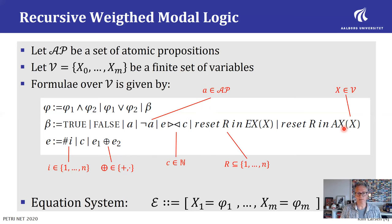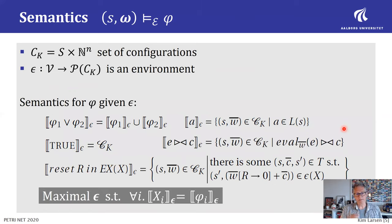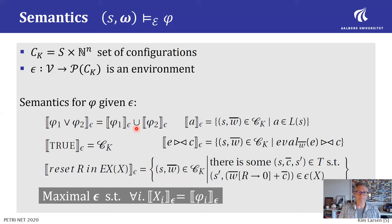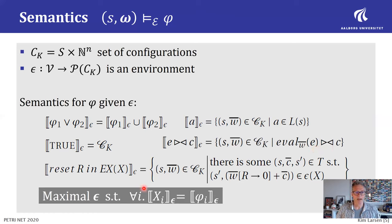We can talk about cost and cost accumulation. For the semantic interpretation, each formula is satisfied by a set of configurations. A configuration is simply a pair of a state and a weight vector. The semantics is denotational: the set of configurations satisfying a disjunction is given by union. The set of configurations satisfying a threshold property is all configurations where evaluating the weight expression E under weight vector W meets the threshold given by constant C.